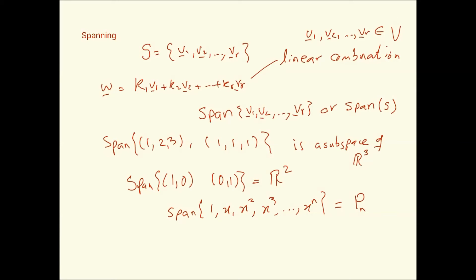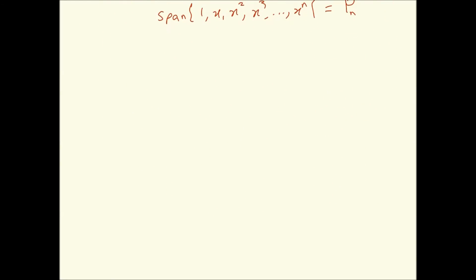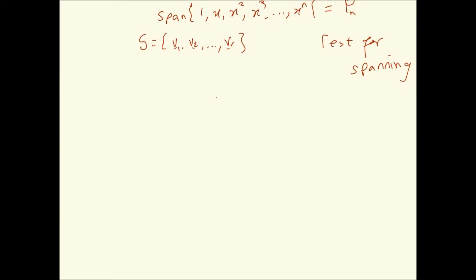How do we test for spanning? This is a very important question. How do we test that something is a valid — that something is within the span of a set? Basically, we have to be able to show that if we take a linear combination of our set, which is v1, v2, ..., vr — this is the test for spanning.